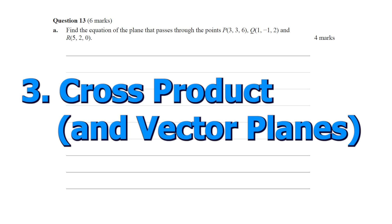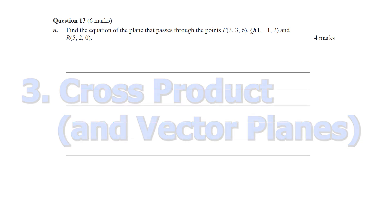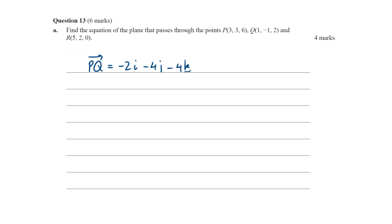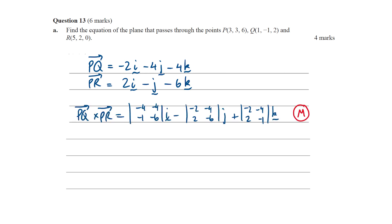On to number three, which is the cross product and its application to vector planes. The example I'll go through for this one again is from the VCAA sample, sample exam one, and it's to find the equation of a plane passing through three points. The easiest way to do that is to create two vectors, say PQ and PR, and then find the cross product of those two vectors. What that's going to give us is the normal to the plane, which we can use to get the equation of our plane.